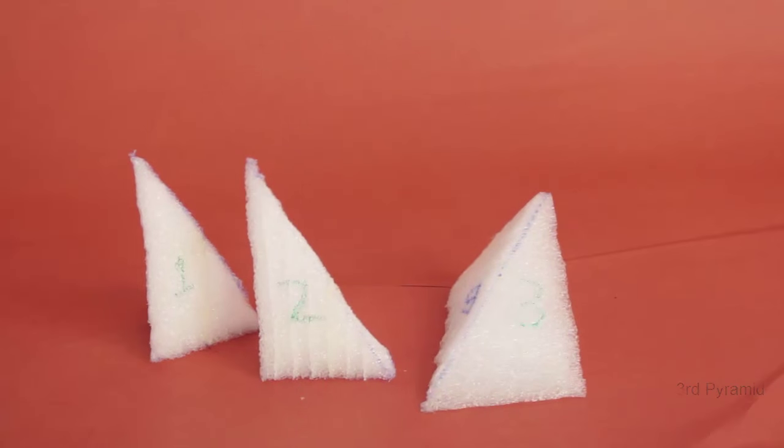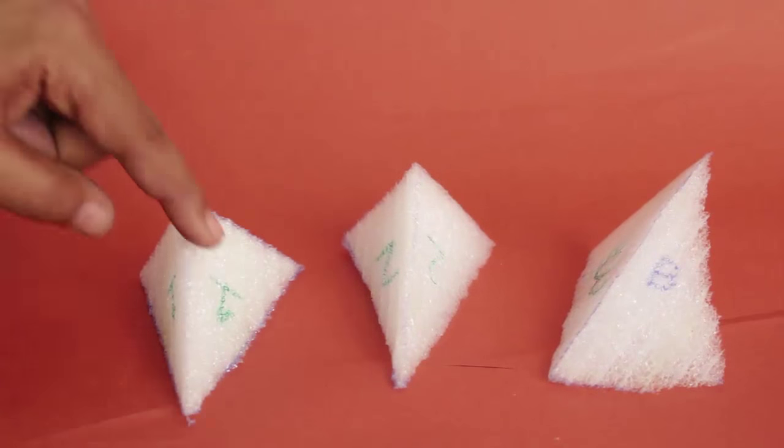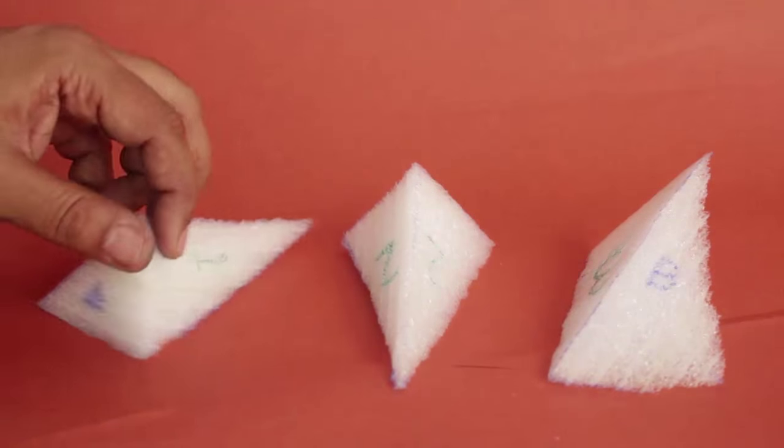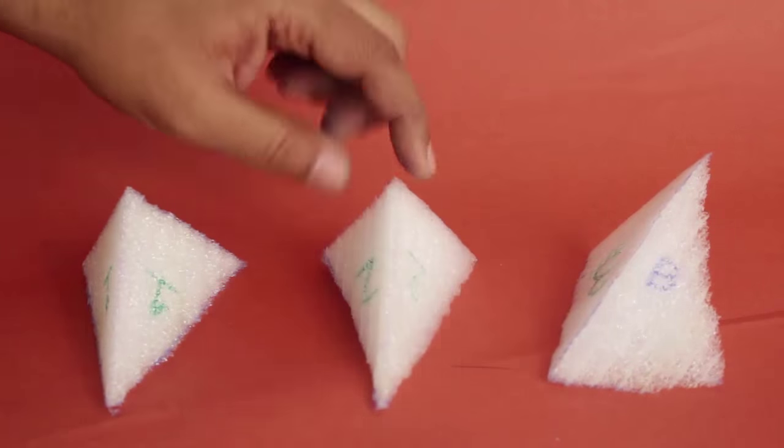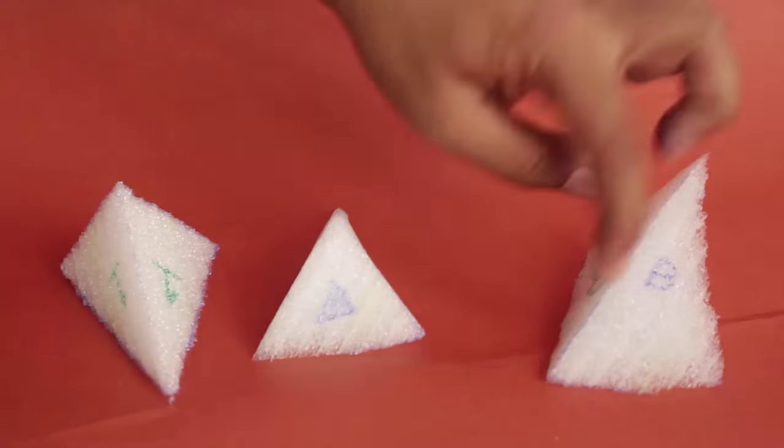Now you can see all these three pyramids have four triangular faces - a base triangle and three triangles on the side. And interestingly all these three pyramids have the same volume. Let's see how.